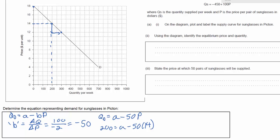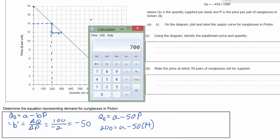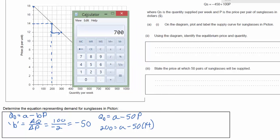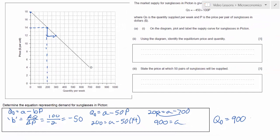Let's simplify that. 50 times 14 equals 700. So we've got 200 equals a minus 700. I can move my 700 over here. I can see that 900 equals a. Now I have everything I need for my demand equation. I know that the quantity demanded of sunglasses equals 900, that's our q intercept of demand, minus 50 times the price.